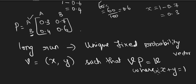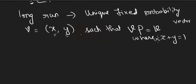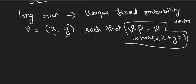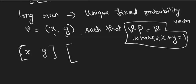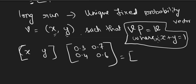If you have three states, then you will have X, Y, Z and you write X plus Y plus Z equals 1. Using this condition and the equation V·P = V, I have to find V, which is the vector [X, Y]. Writing it in matrix form: V is [X, Y] and P is the transition probability matrix with values 0.3, 0.7 in row A and 0.4, 0.6 in row B.